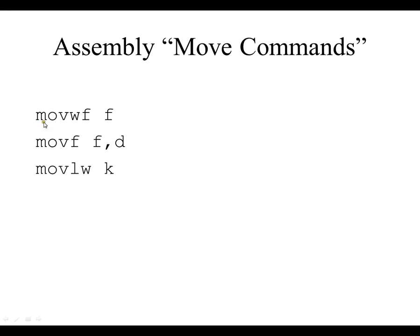The three commands we're going to learn today are move W to F, move F, and move literal to W. These are the formats of the commands. The command has a mnemonic and then a file register. This one has the mnemonic, the file register, and the data direction bit. This one is the mnemonic and then the literal value.